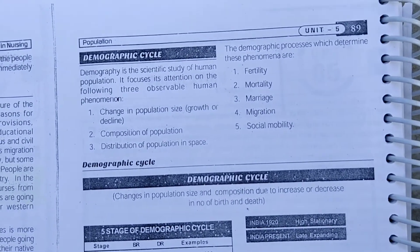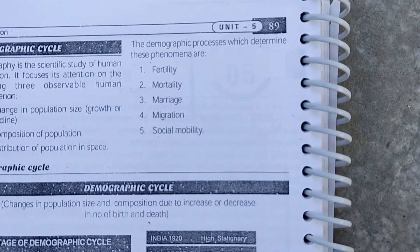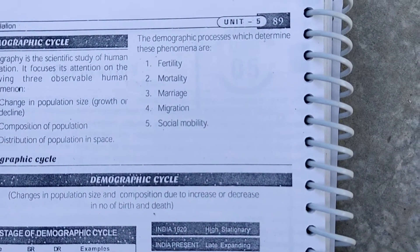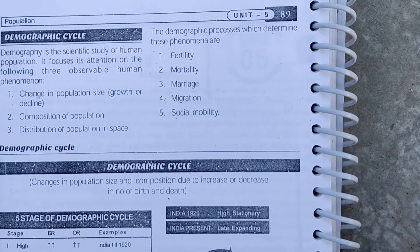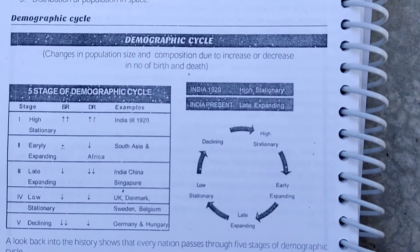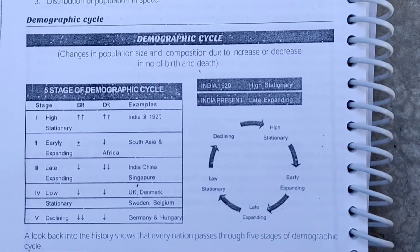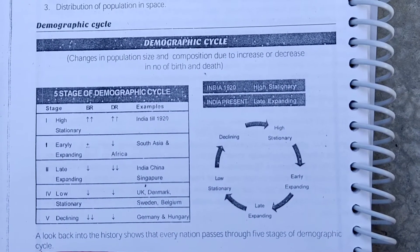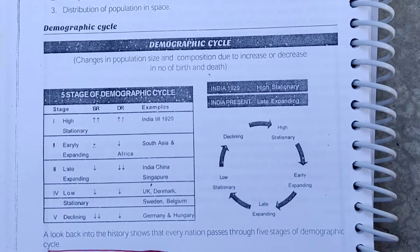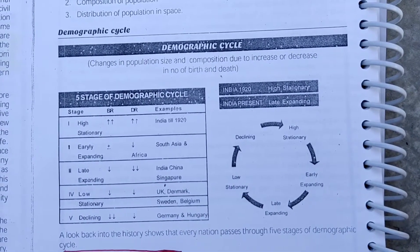In the study of the demographic cycle, the demographic processes that determine these phenomena are mainly fertility, mortality, marriage, migration, and social mobility. The demographic cycle refers to changes in population size and composition due to increases or decreases in the number of births and deaths.